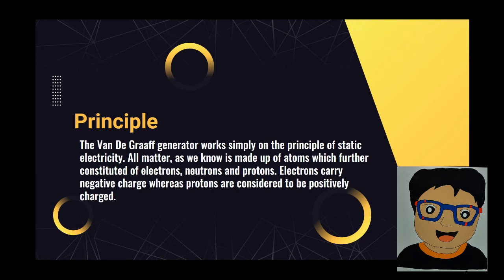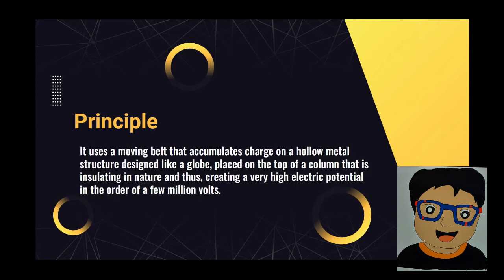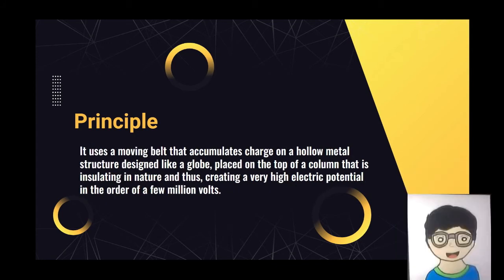Principle: The Van de Graaff generator works simply on the principle of static electricity. All matter, as we know, is made up of atoms, which are further constituted of electrons, neutrons, and protons. Electrons carry negative charge, whereas protons are considered to be positively charged. It uses a moving belt that accumulates charge on a hollow metal structure designed like a globe, placed on top of an insulating column, creating a very high electric potential in the order of a few million volts.